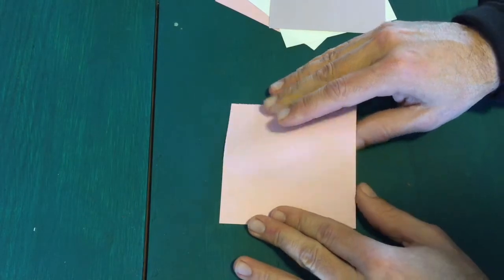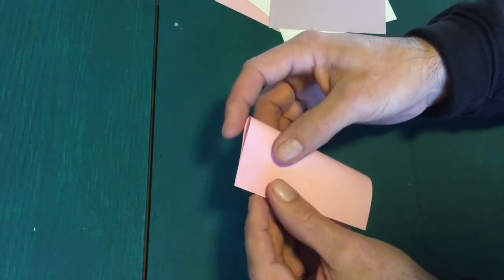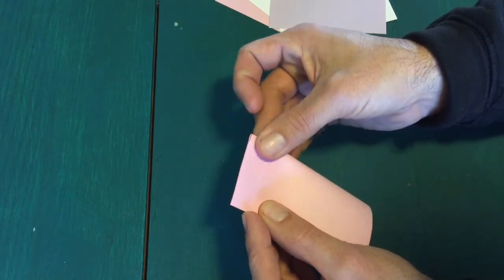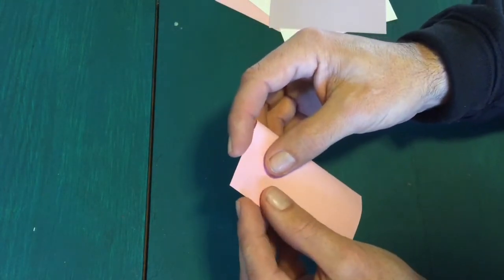Start by folding your square in half longitudinally. Make sure that you're very precise in lining up the corners as precision is going to be the key to success with this project.